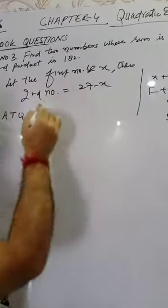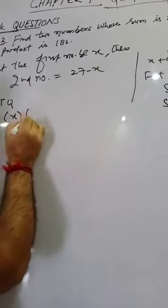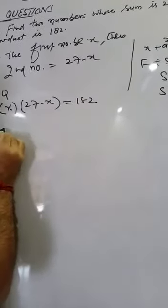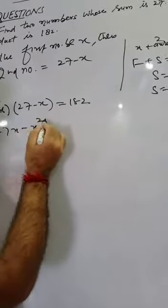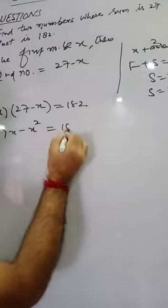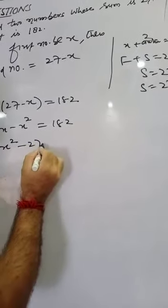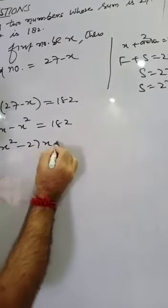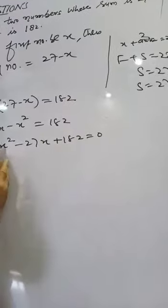According to the question, their product — that is, first number times second number — is equal to 182. So the equation becomes x times (27 minus x) equals 182. Further, you can write it as x squared minus 27x plus 182 equals 0. This is your required quadratic equation.